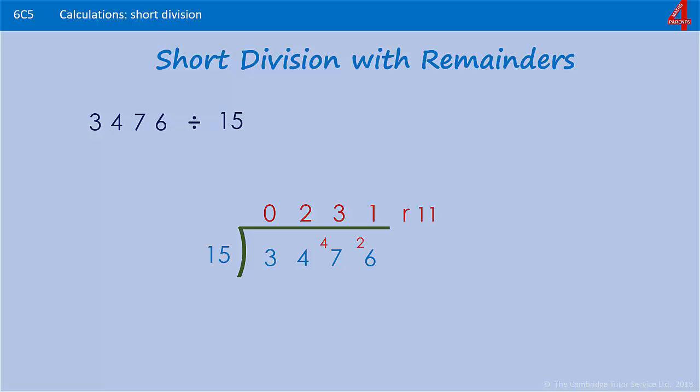So 3476 divided by 15 is 231 remainder 11, and here's one for you to try. Pause the video and have a go.